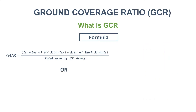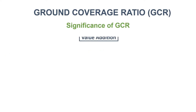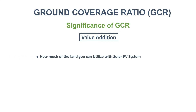You can also derive another formula which gives you the same value. As you see in the picture, GCR equals the ratio of the length of the PV table or array to the inter-row pitch between two adjacent PV tables.